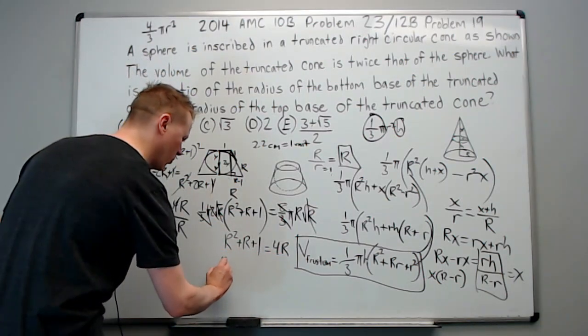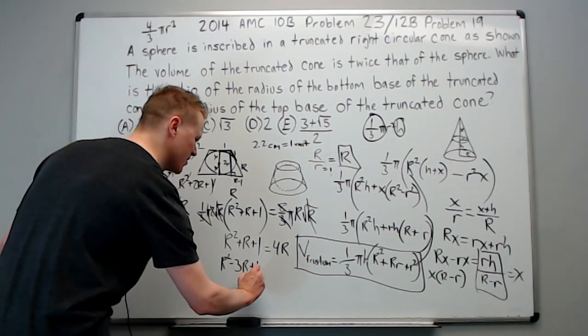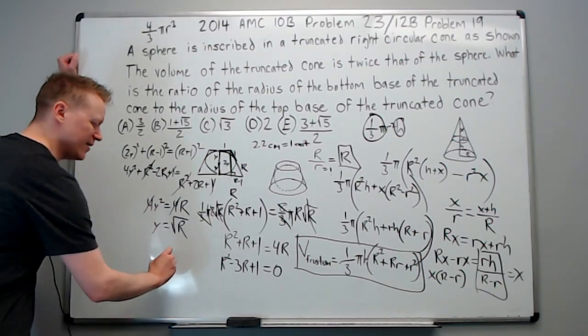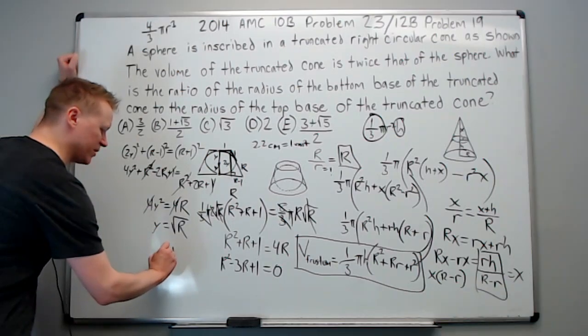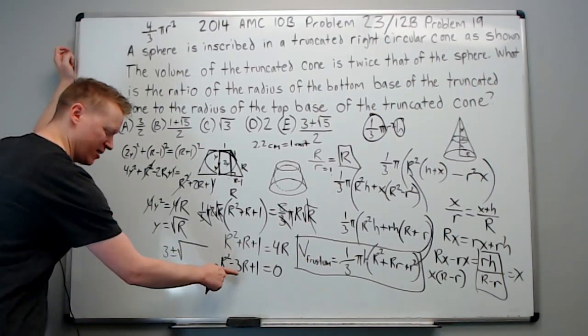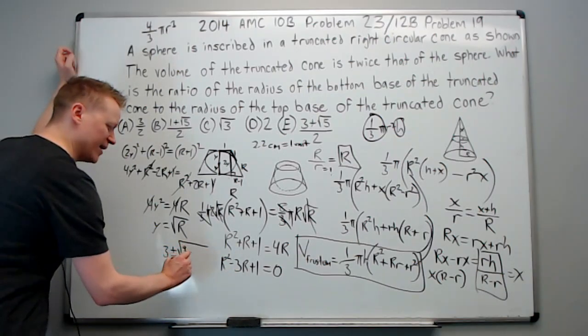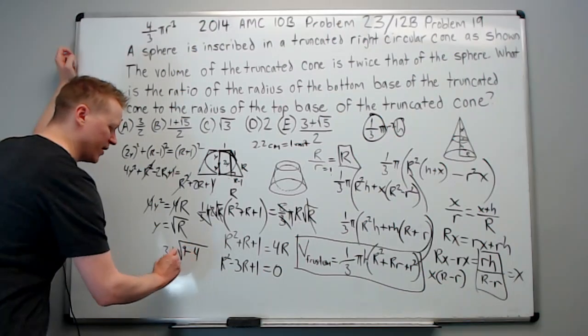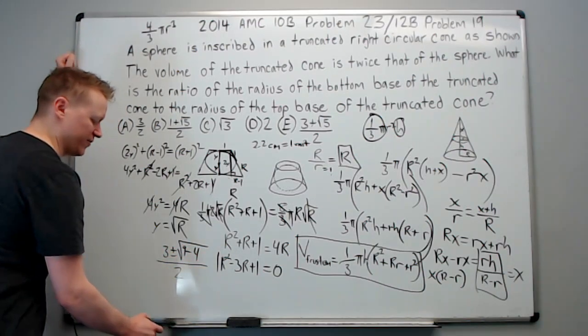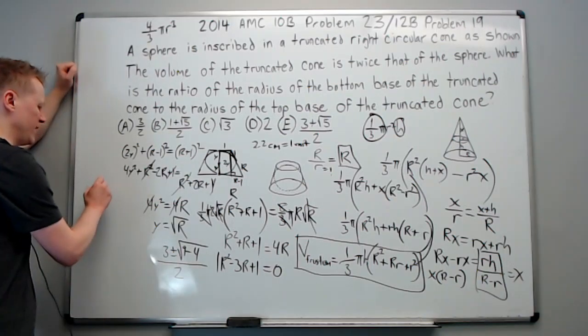Subtract 4R to get R squared minus 3R plus 1 equals 0. We're going quadratic formula. Negative b is positive 3 plus or minus the square root of b squared. b being the coefficient. 9 minus 4a and c are both 1. So it is just 9 minus 4 over 2a, which is the coefficient here, which is 1. So you get this expression.